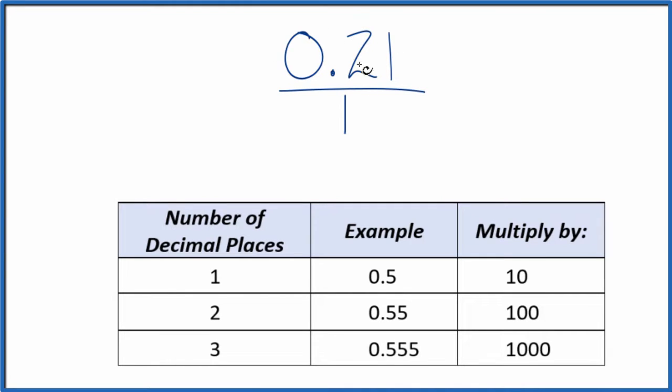Now we need to get this up here, the numerator, to be a whole number. We have two decimal places. If we have two decimal places, we could just multiply this by 100. That'll give us a whole number.